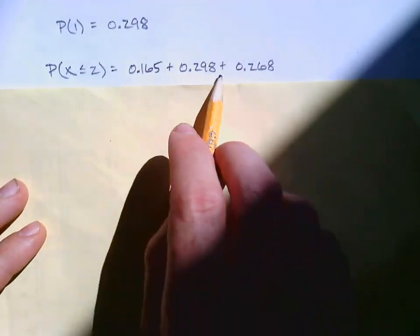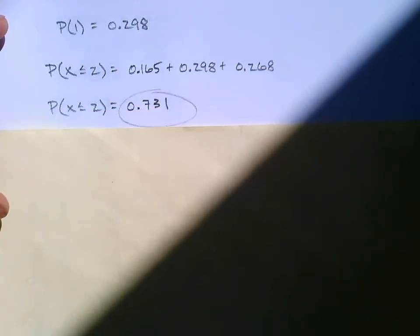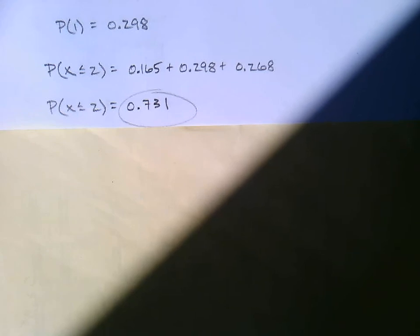So 0, 1, and 2, we add them all up. We'll get the probability that x is less than or equal to 2. And here it is, 0.731. So those are pretty good odds that you're going to get 2 or fewer new clients during any given hour. That's pretty good. Easily over 70% of the time.